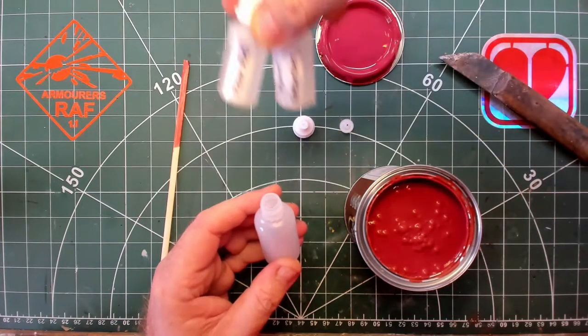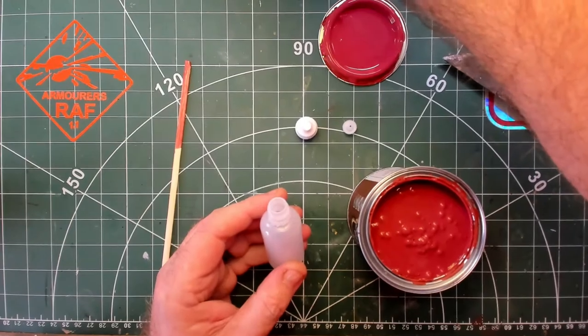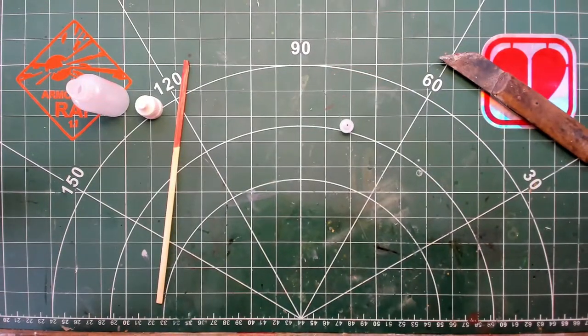Next, add a few drops of Flow-Aid and paint retarder. Then give it a good old shake.